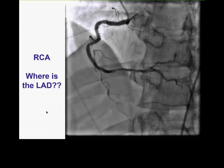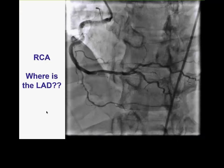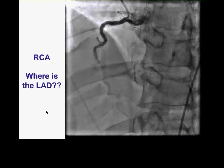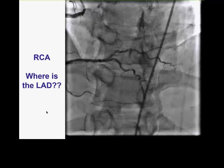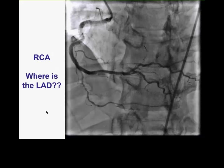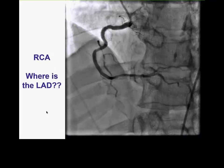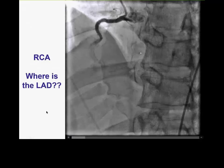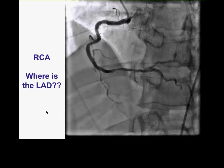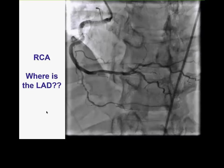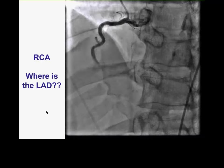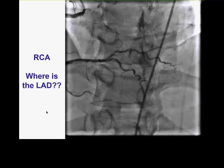Feel free to enter notes and questions into your Webex screen. The first question is to understand where the LAD is, and whether there even is an LAD. There are rare occasions when the target vessel is absent or so diffusely diseased it can barely be seen. One option is to do a dual injection to see if something is filling; another is coronary CTA, which can sometimes demonstrate vessel filling and its origin.